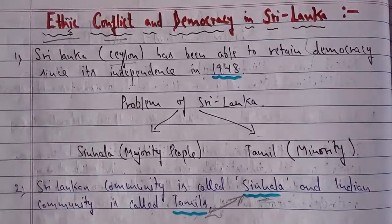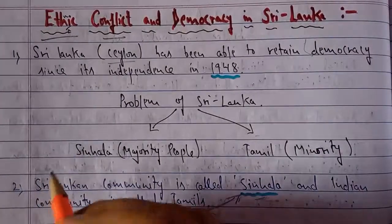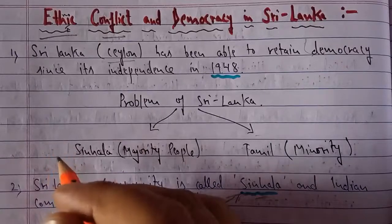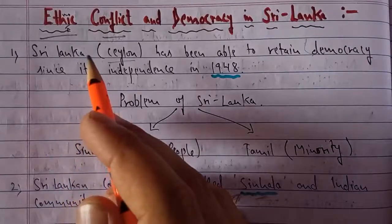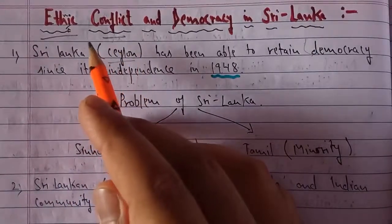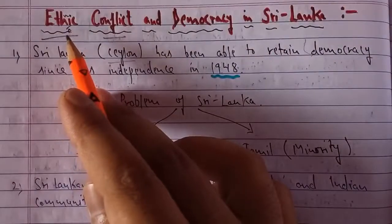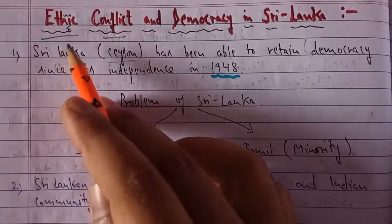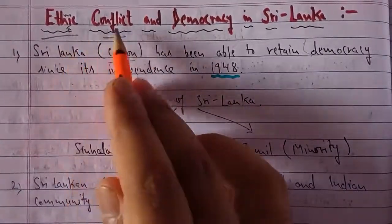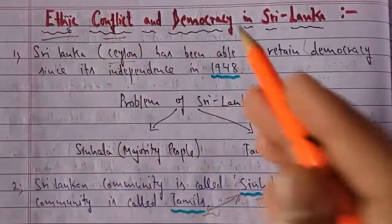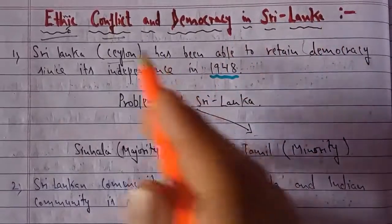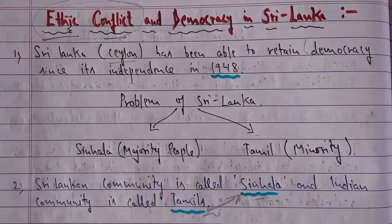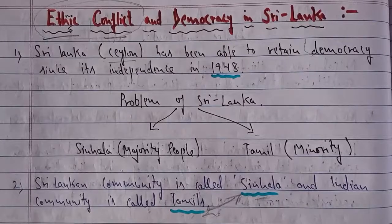Sri Lanka established democracy just after independence in 1948 and has continued with the democratic form of government. However, the problem here is different — Sri Lanka has a different sort of problem: ethnic conflict. 'Ethnic' refers to different racial or cultural groups, and there are two ethnic groups in conflict in Sri Lanka. We will discuss these two cultural groups which have created a lot of problems for the Sri Lankan government in maintaining the democratic character of their country.